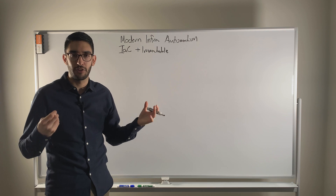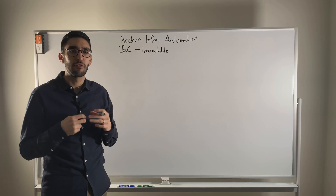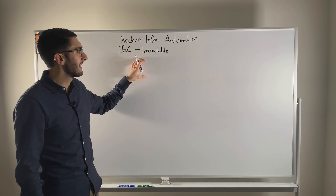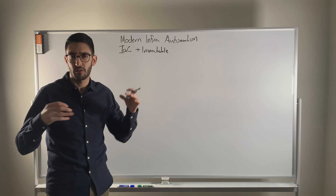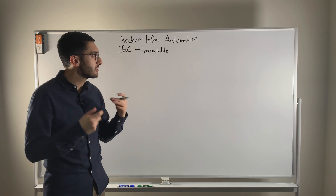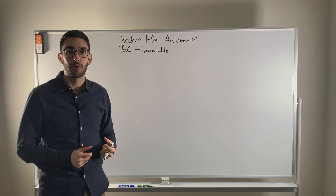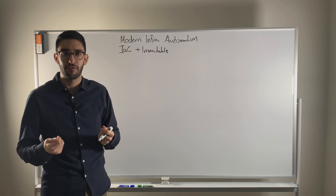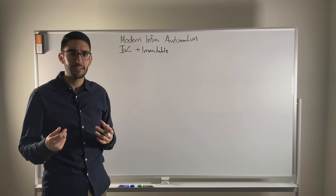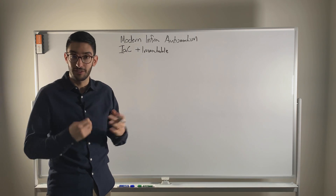If we provision 50 servers manually, all 50 might be slightly different — we've introduced a bunch of accidental complexity versus if all 50 were identically the same. Immutability is the same concept: it simplifies things so we don't have to think about 50 different web servers slightly different in their configuration. We might have 40 running version one and 10 running version two. This reduces the risk that things break in unpredictable ways, since at runtime the question becomes simply: did it boot or did it not boot?